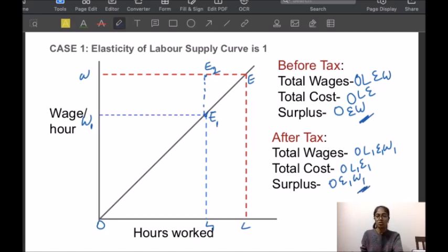Hence, the total loss suffered by the individual is WW1E1E. It has two components out of which the area WW1E1E2 is paid to the government as tax. But the area E1E2E is the additional loss suffered by the taxpayer. And this is the loss that is known as excess burden of taxation.